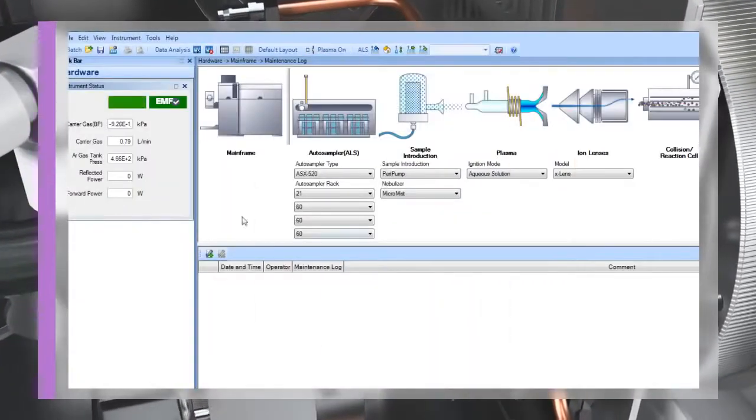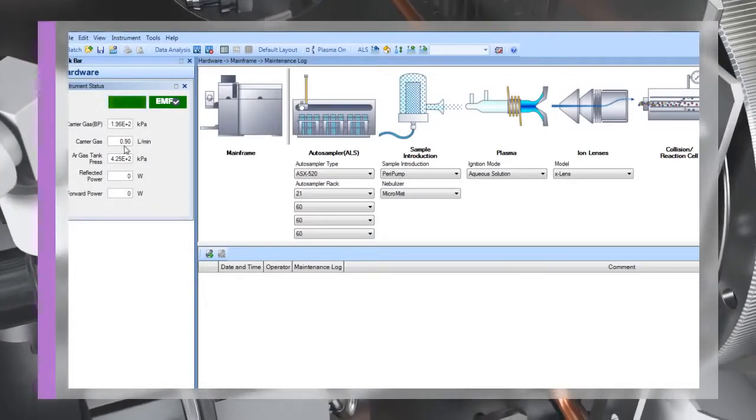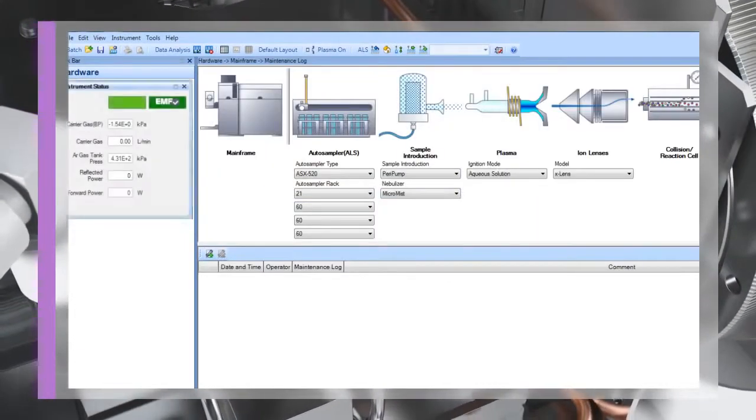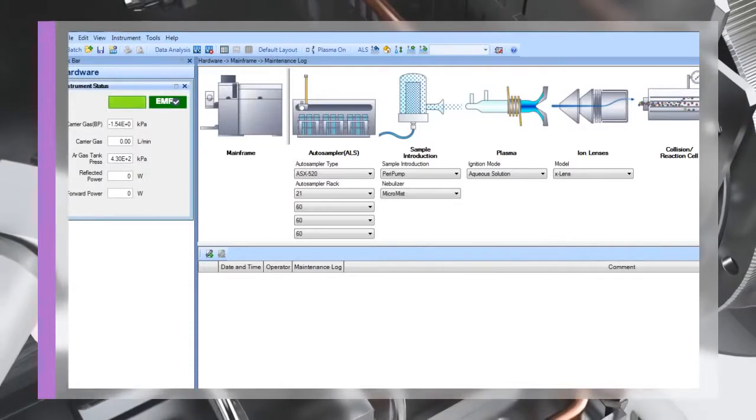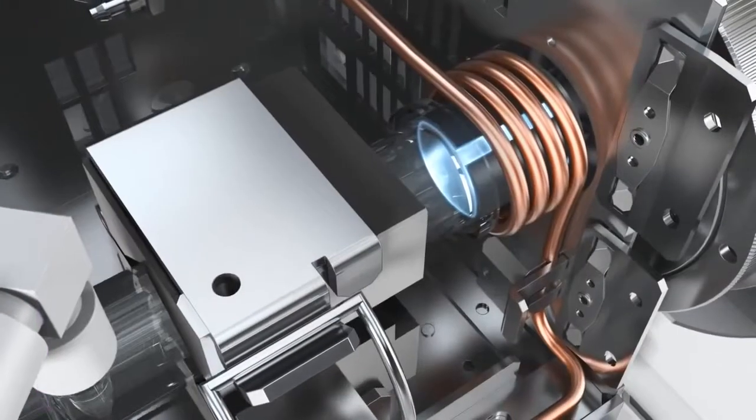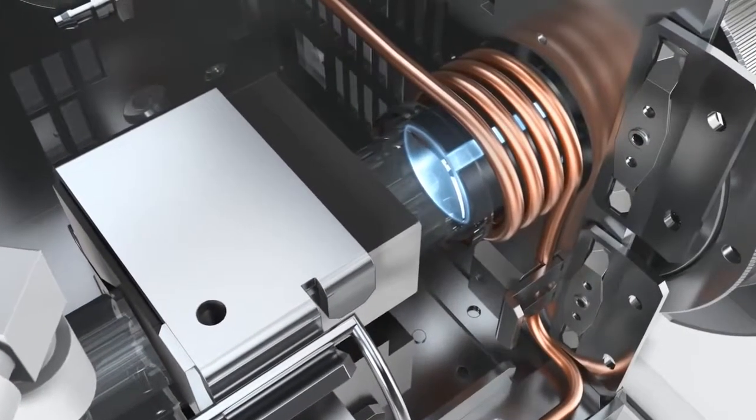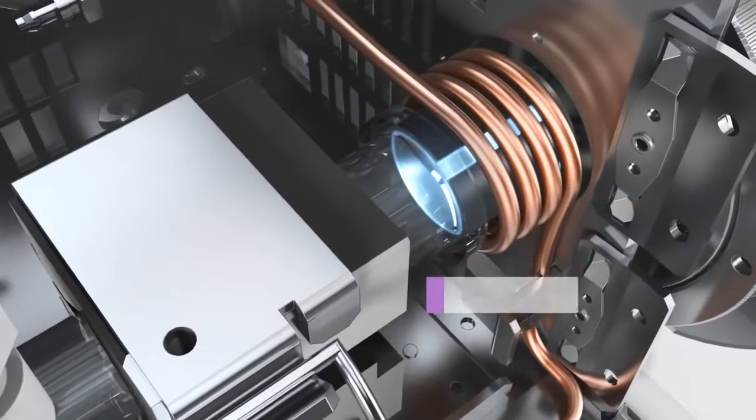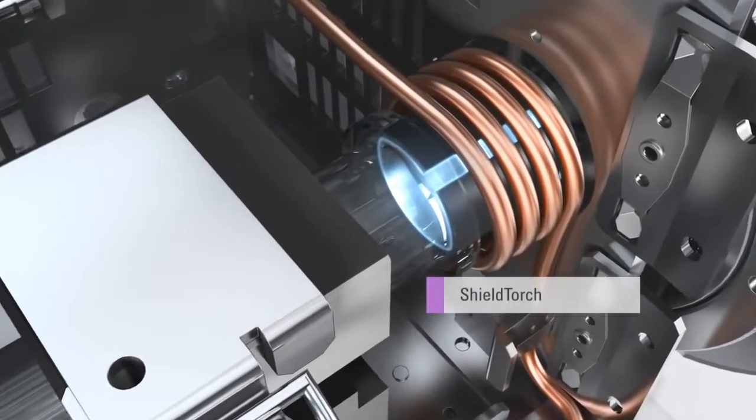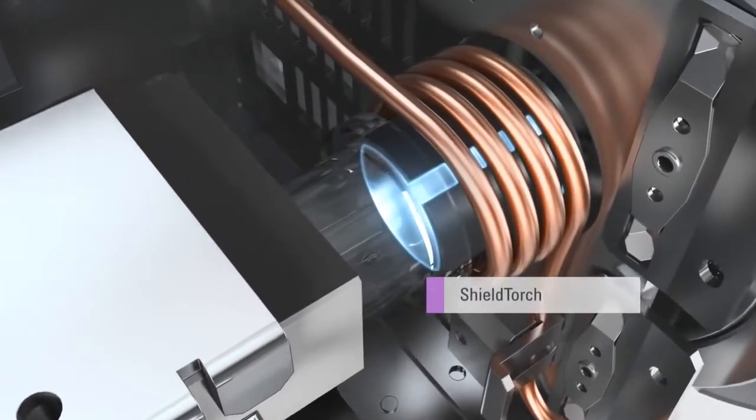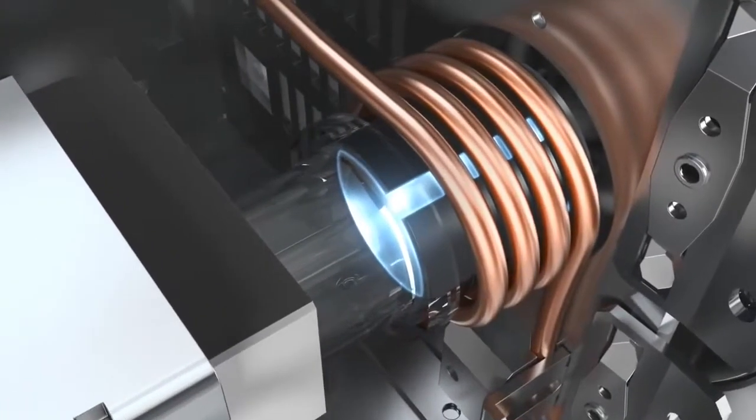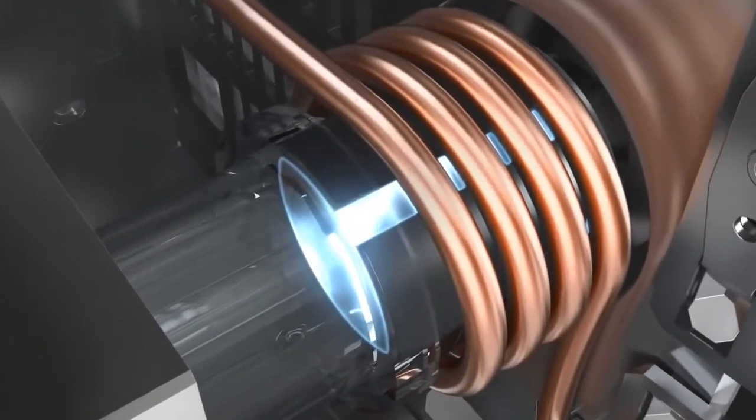The torch position optimization is automated as part of the MassHunter software startup sequence, ensuring consistent operation from day to day. All 7700 series instruments are fitted with Agilent's shield torch system, which ensures that ions enter the vacuum system with a narrow energy distribution. This is essential for the most efficient interference removal in the collision reaction cell.